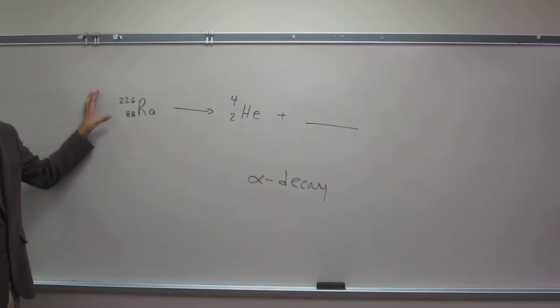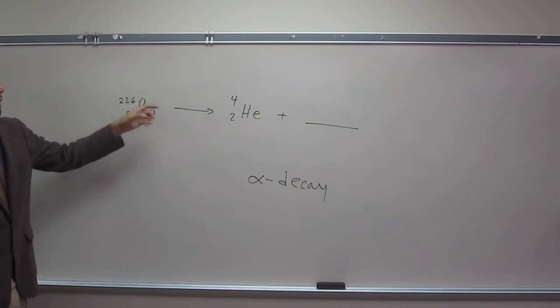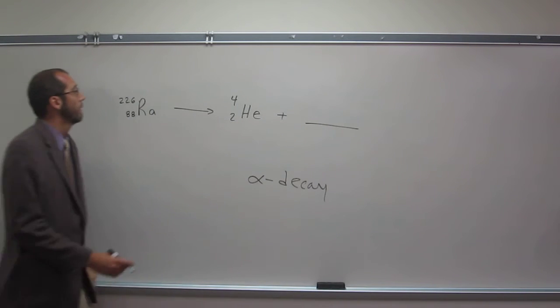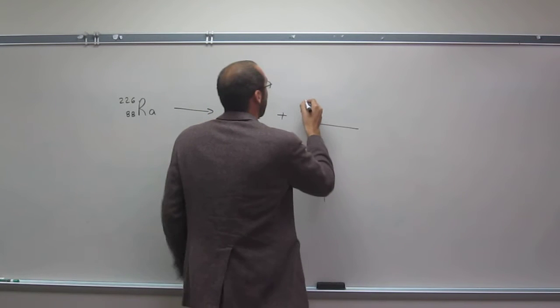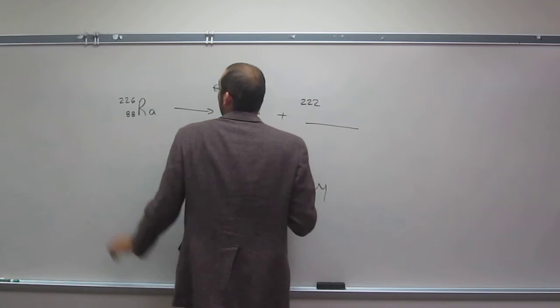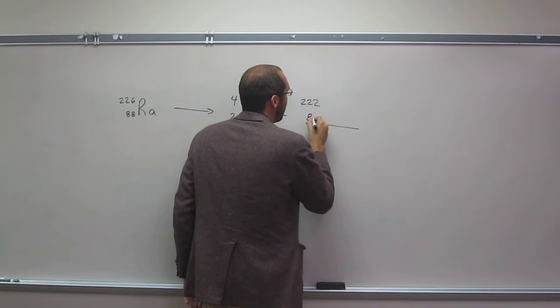OK, so same thing. We have to add this side equal to this side. So this is going to be 226 minus 4 is 222. And 88 minus 2 is 86.